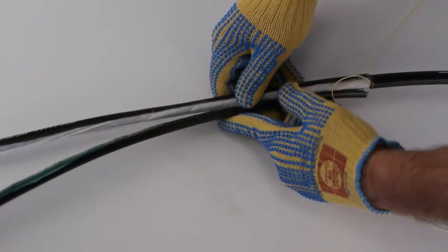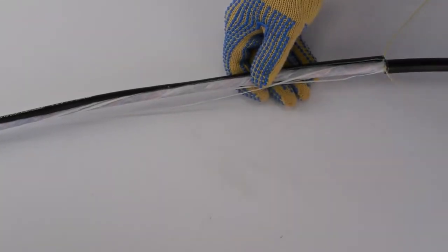Remove the jacket material to expose the cable core. For single rip cord cables, gently pull the cable core through the opening created by the rip cord. Do not exceed the cable's minimum bend radius.